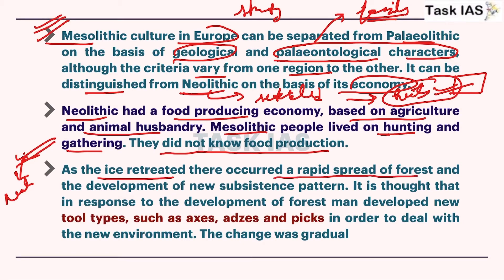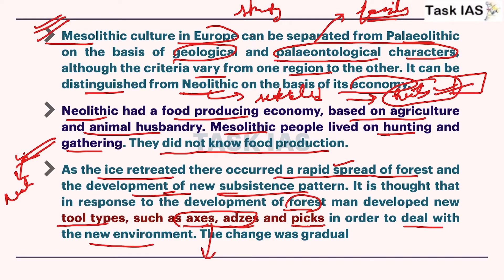As ice retreated, there occurred a rapid spread of forest and development of new subsistence patterns. To clear dense forest, humans developed different types of tools such as axes and picks to deal with the new environment. Although axes are special features of Neolithic, in areas of Mesolithic with very dense forest, some people started developing these tools earlier than others.